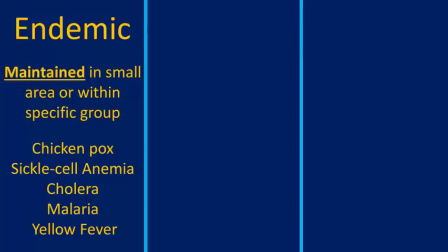The first of our geographic terms that are also medical terms is endemic. Endemic means it's maintained or constant, always there, within a small geographic area or within a specific group of the population.